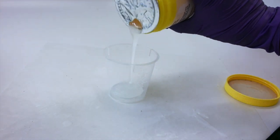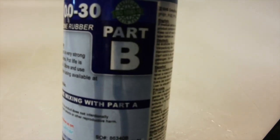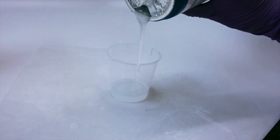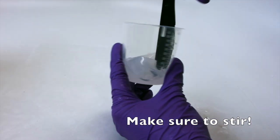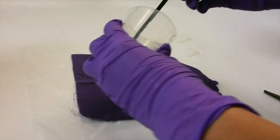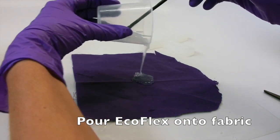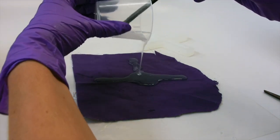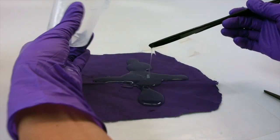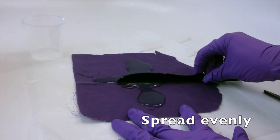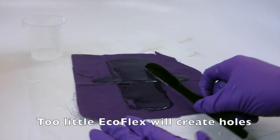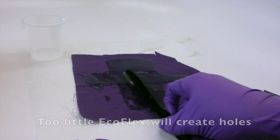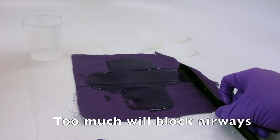Mix more EcoFlex using the same steps as earlier. Make sure to have wax paper under the fabric before you pour the EcoFlex. Spread the EcoFlex evenly over the fabric. Be careful because too little EcoFlex will not bond the two layers and you will have air holes. If you use too much, it may clog the airways.